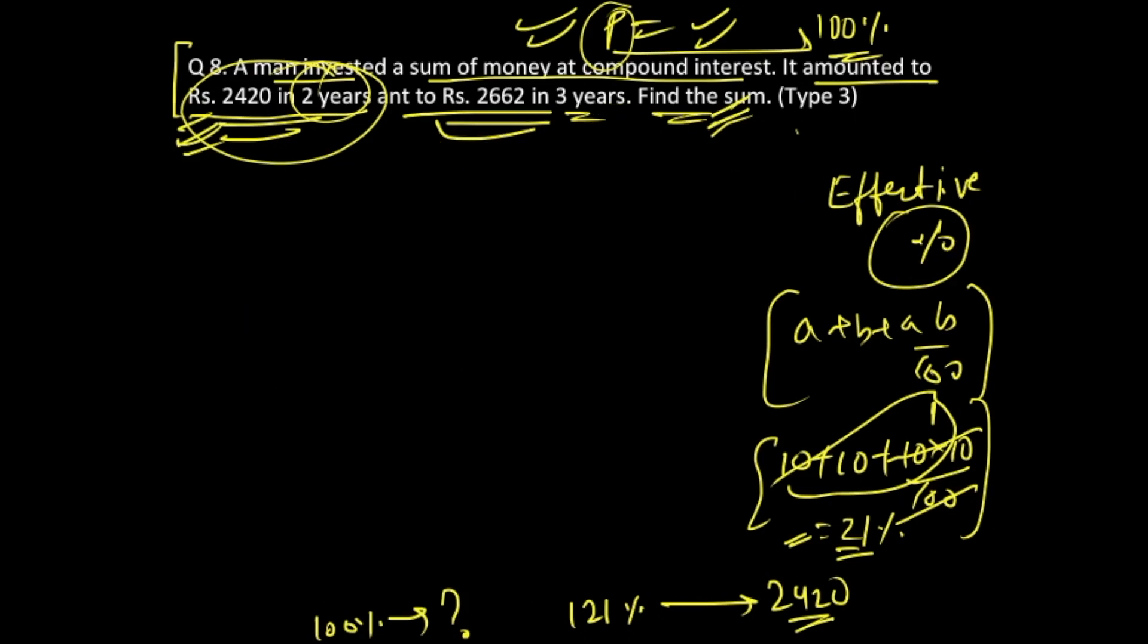So in order to solve that, you will do a cross multiplication and you are going to get your answer as 2420 divided by 121 into 100. Right? So if you solve it, you know that this gets cancelled out over here.